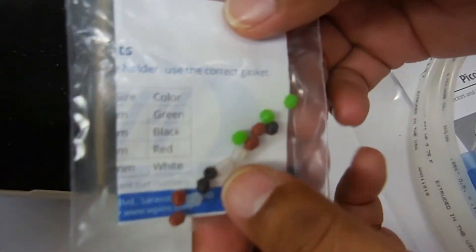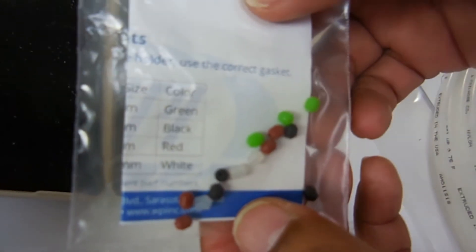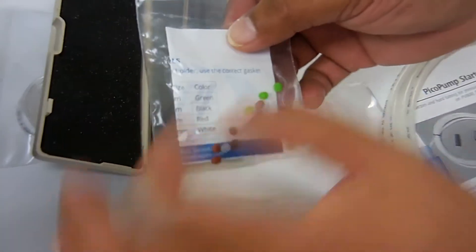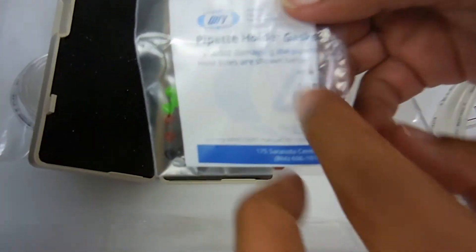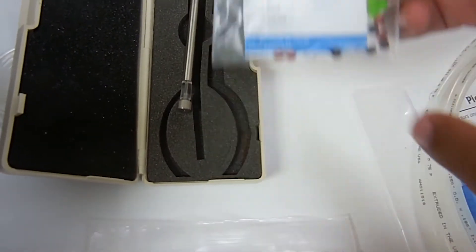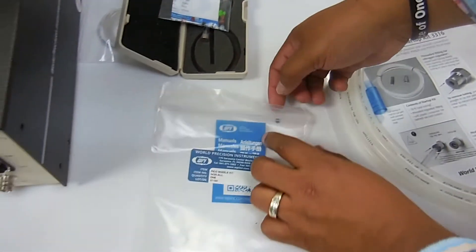These gaskets accommodate depending on the outer diameter of your glass. You have a little sheet here that tells you, depending on the outer diameter, which color gasket is required.